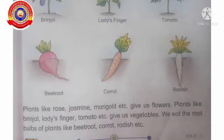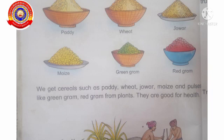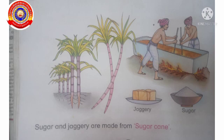Plants like rose, jasmine, marigold, etc. give us flowers. Plants like brinjal, lady's finger, tomato, etc. give us vegetables. We eat the root bulbs of plants like beetroot, carrot, radish, etc. We get cereals such as paddy, wheat, jowar, maize and pulses like green gram, red gram from plants. They are good for us. Sugar and jaggery are made from sugarcane.